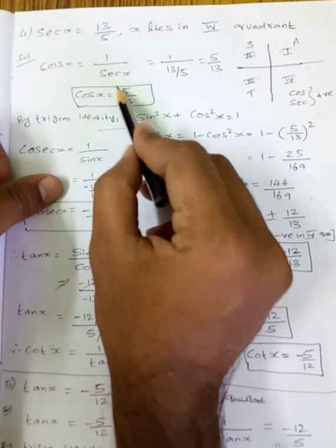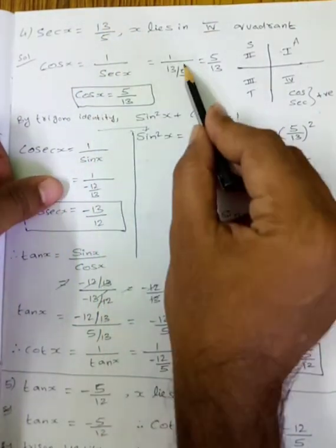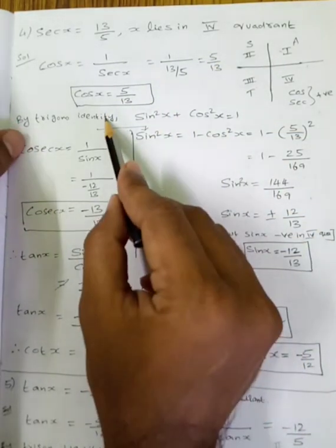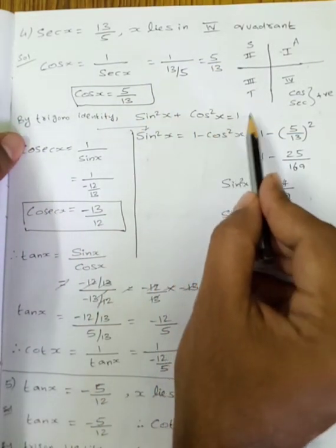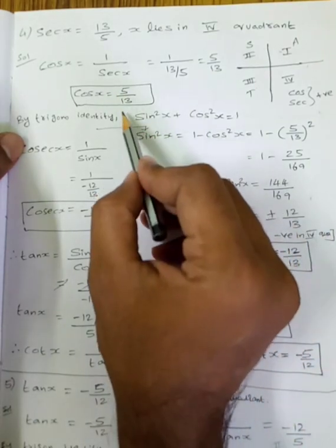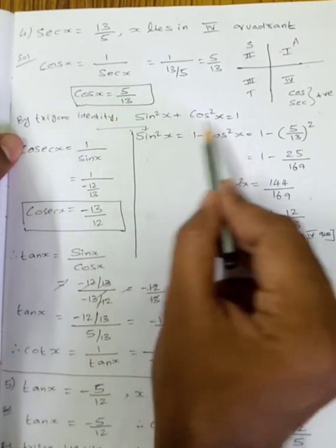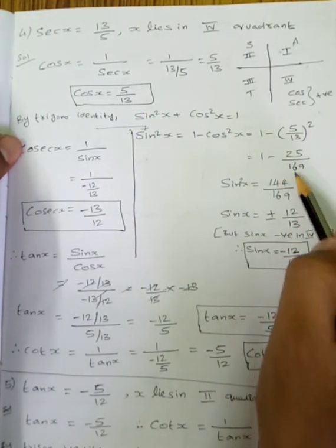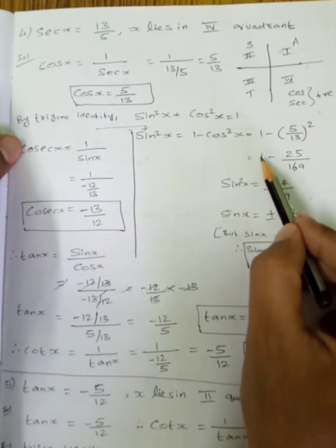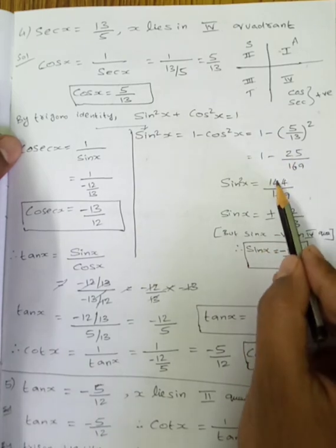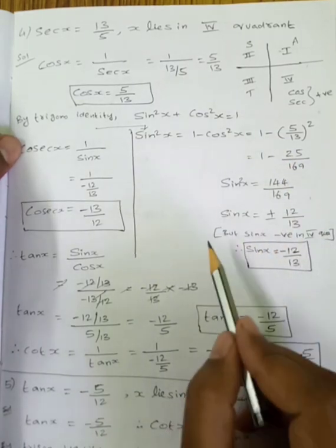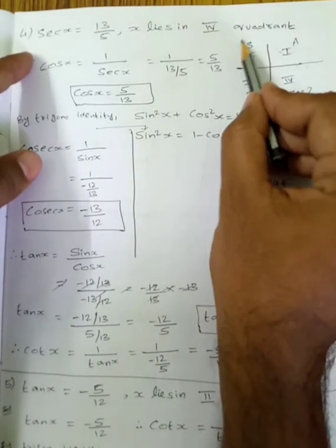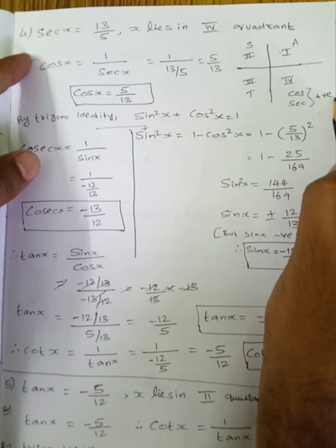Fourth question: sec x equals 13 by 5. So cos x equals 1 by sec x, which is 1 by (13 by 5), so cos x equals 5 by 13. Using the trigonometric identity sin²x plus cos²x equals 1, so sin²x equals 1 minus cos²x, equals 1 minus 25 by 169, equals 144 by 169. So sin x equals plus or minus 12 by 13. Since cos and secant are positive in the fourth quadrant, sin x is negative.